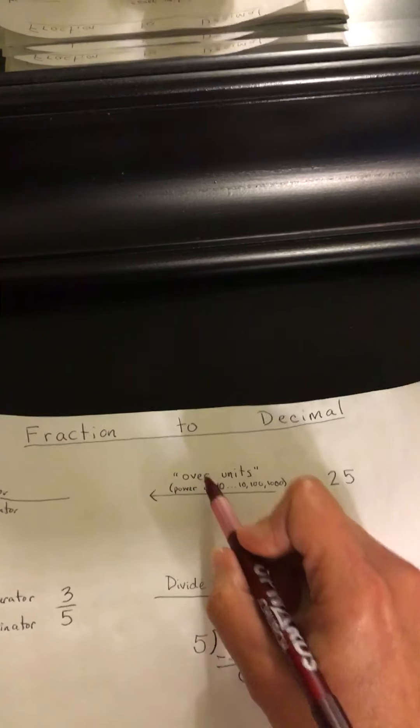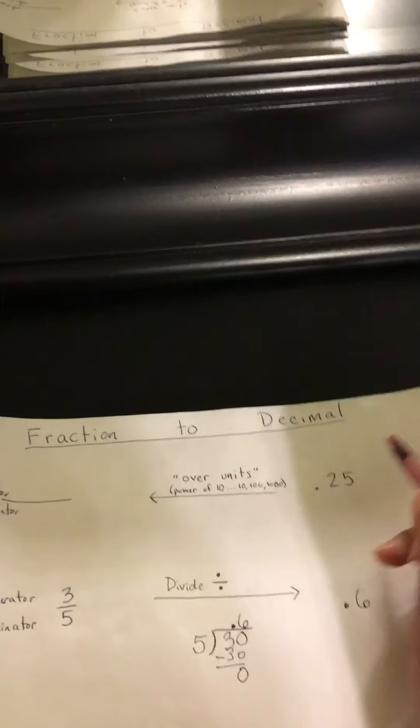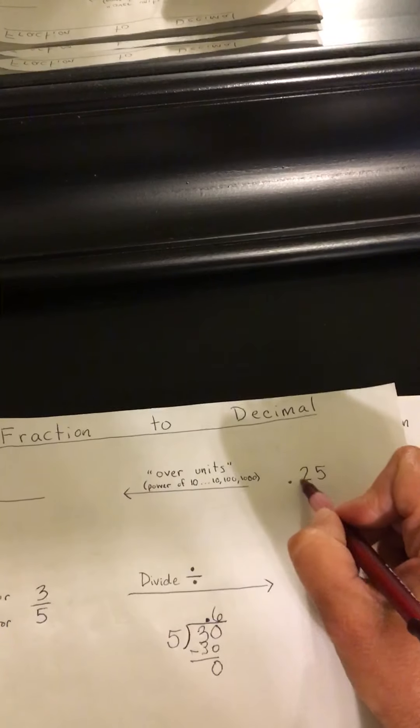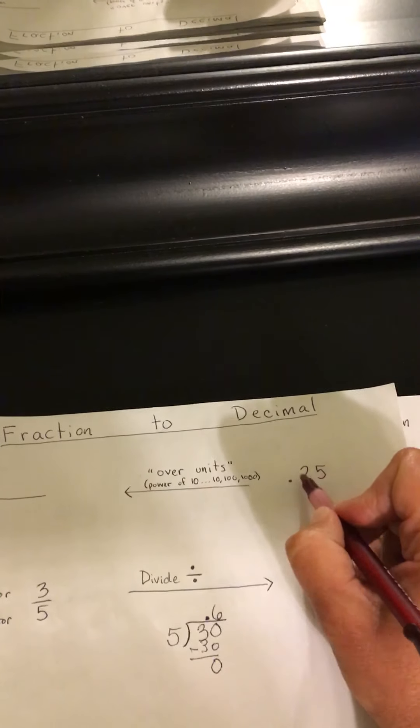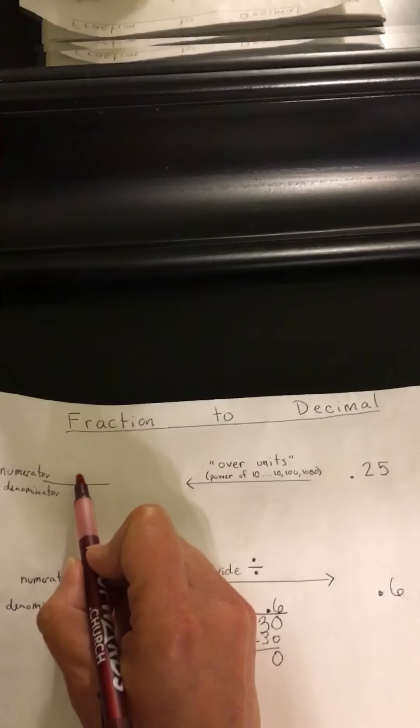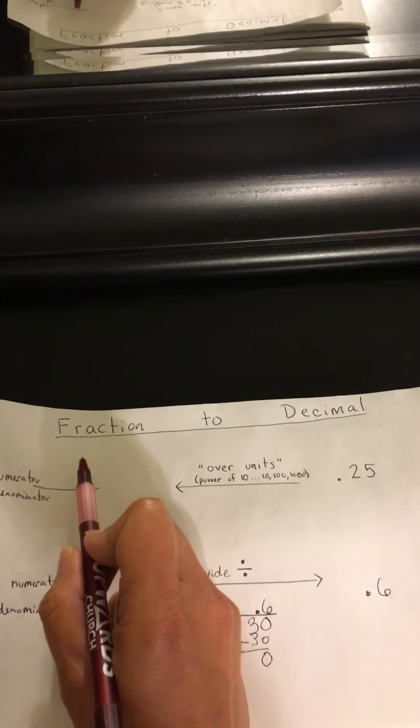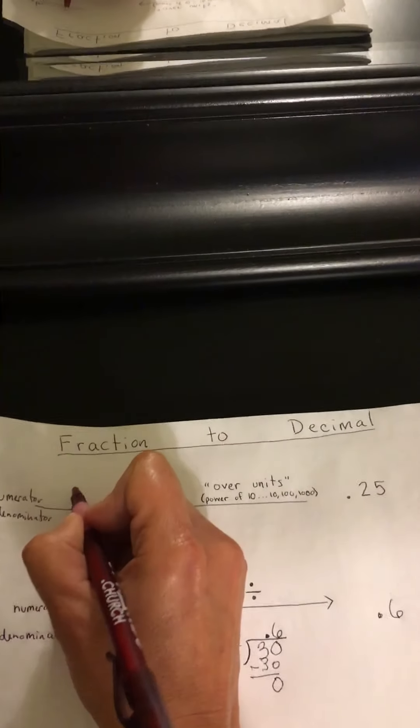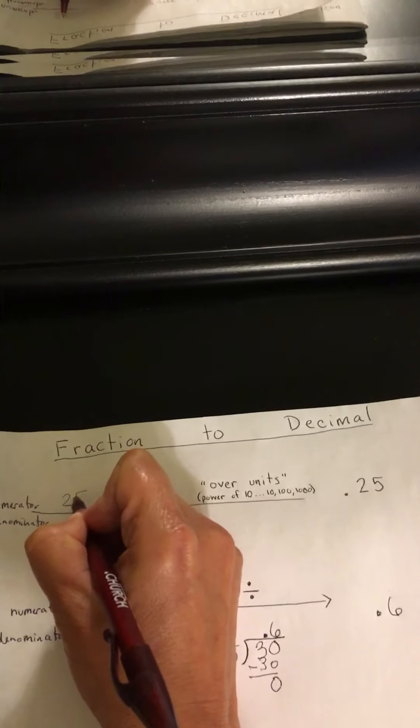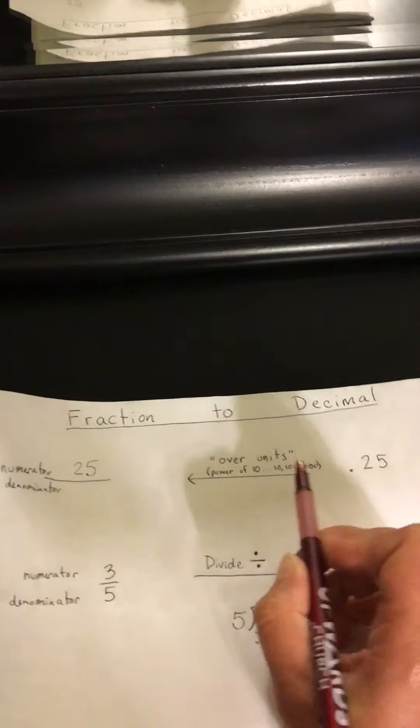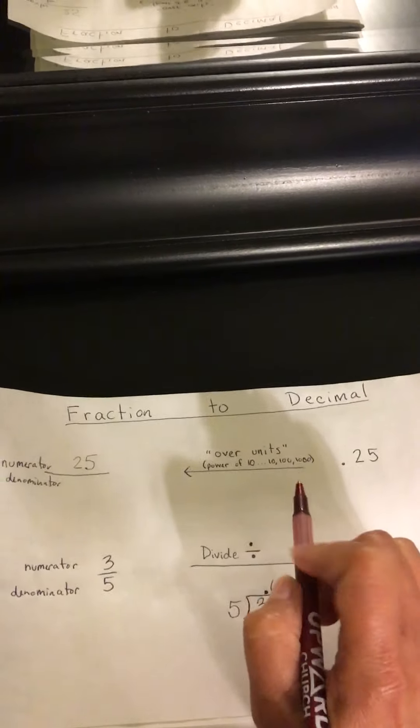I use the little tip or the trick, over units. So this number right here will go on the top in the numerator of your fraction. So I'm going to go ahead and translate that over. And then it's going to be over units. Now, what does over units mean?